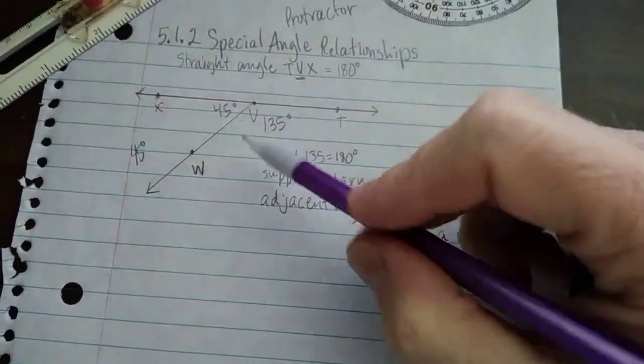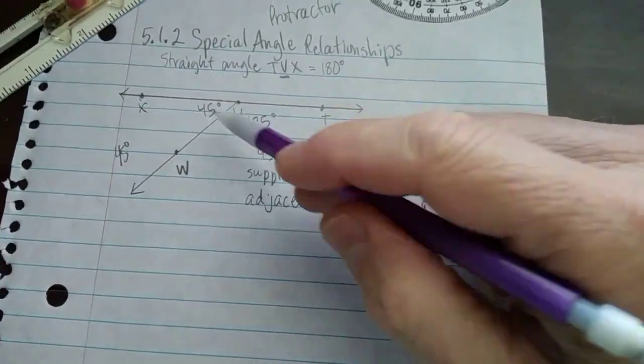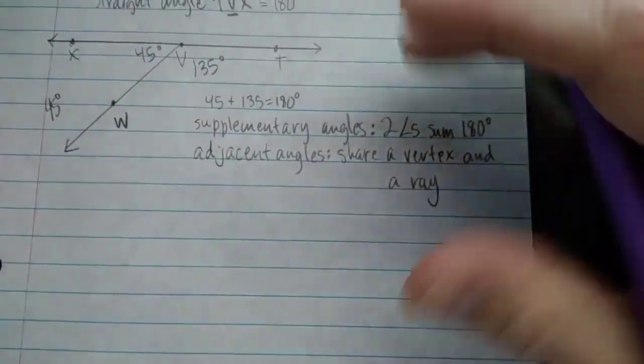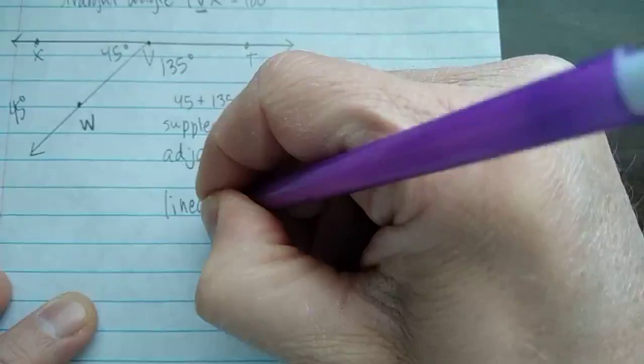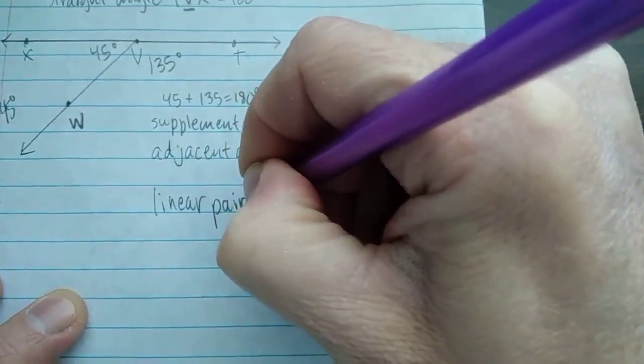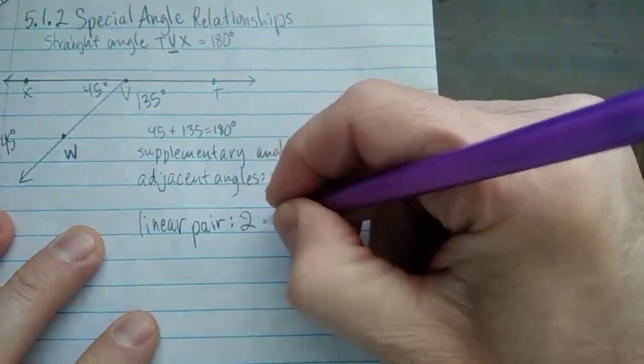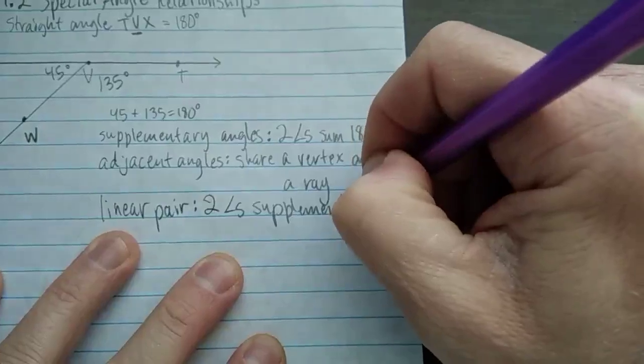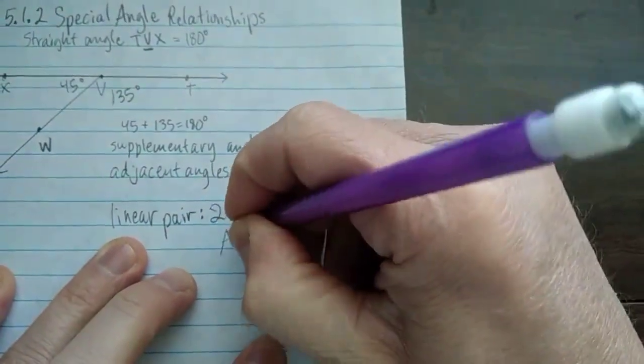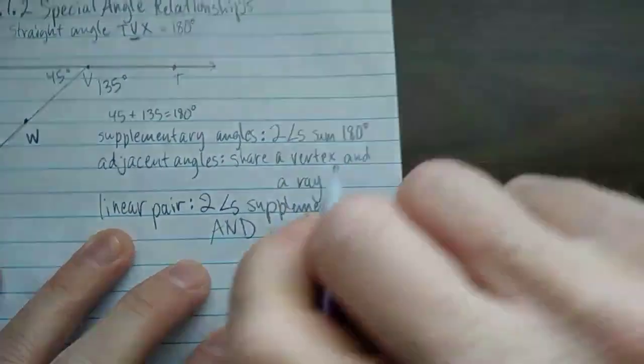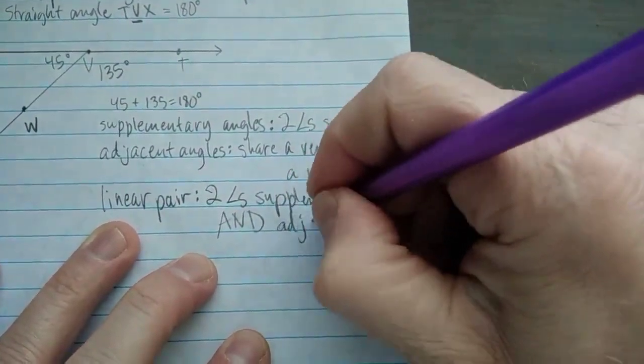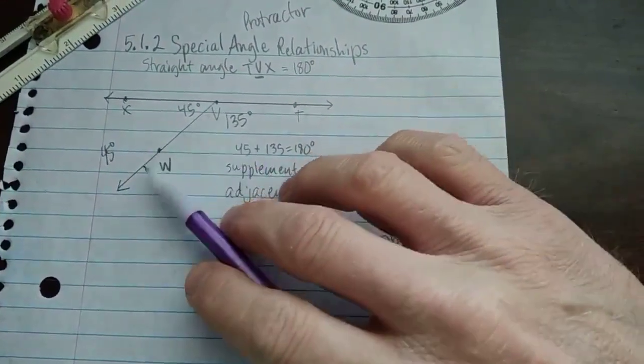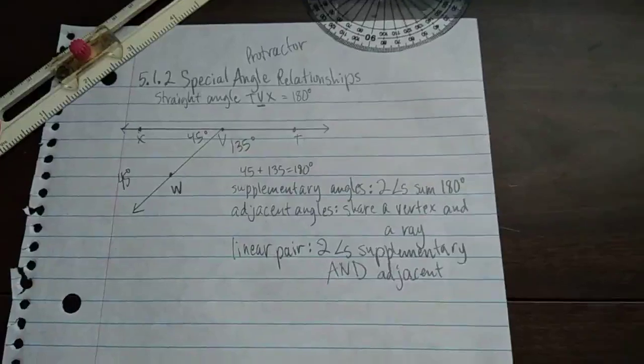Now, when you are supplementary, you add up to 180. Well, when you have two angles that are supplementary and adjacent, it has a special name. That is called a linear pair. Two angles that are supplementary. So as long as they share a vertex and a ray and add up to 180 degrees, that is called a linear pair.